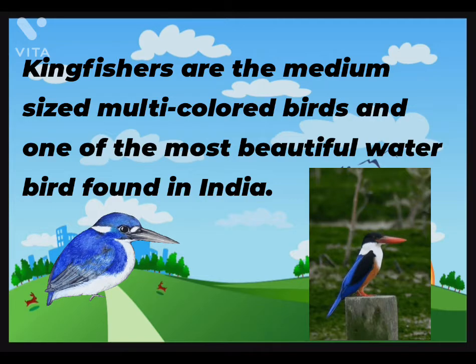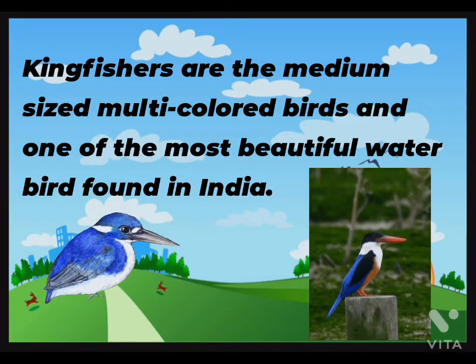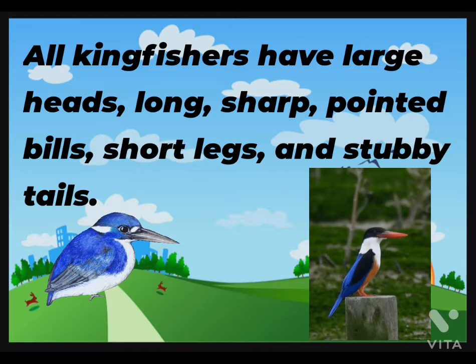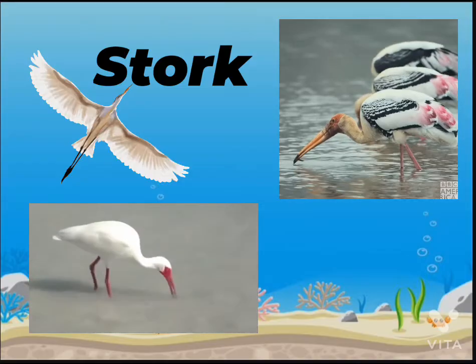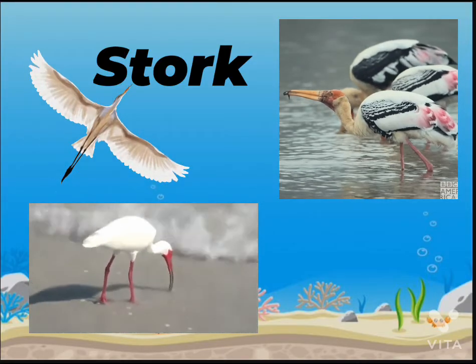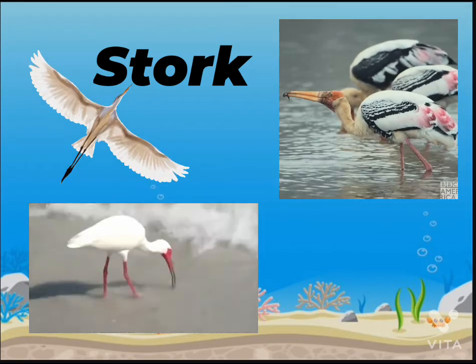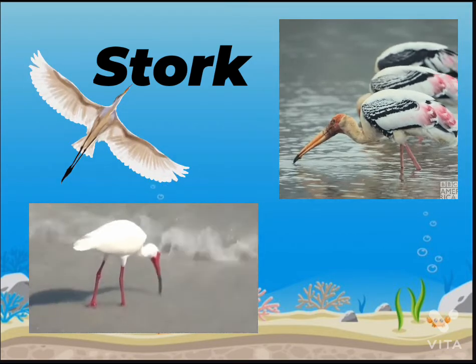Kingfishers are medium-sized, multi-colored birds and one of the most beautiful water birds found in India. All kingfishers have large heads, long sharp pointed bills, short legs, and stubby tails. Children, look at this picture — which bird is it? Yes, it is the stork. In Hindi, we call it Saras pakshi.